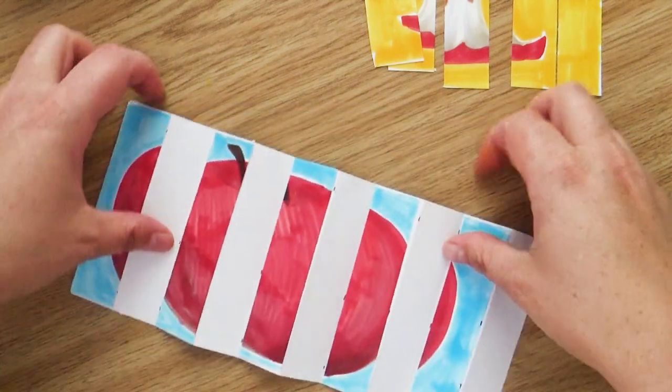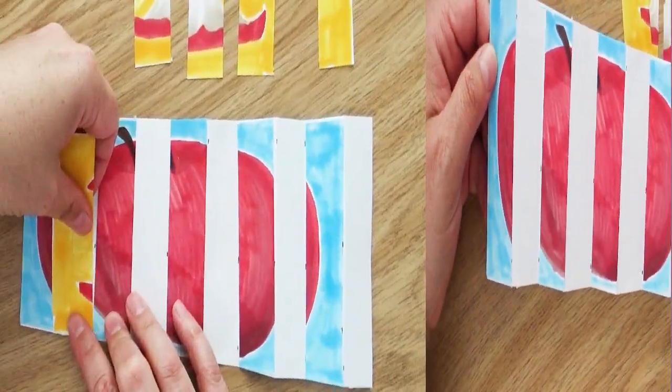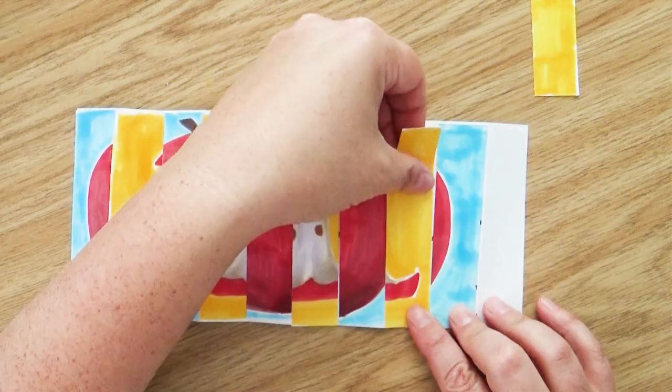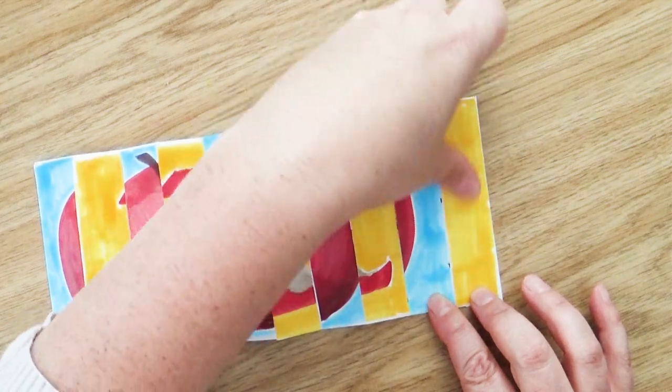Now you might have already guessed, but when you go to glue on your second picture, you're going to glue in the empty spaces between. Now our picture is really crazy, but guess what? It's done.